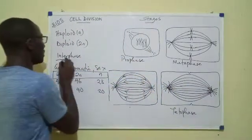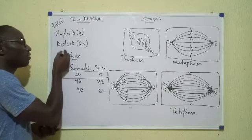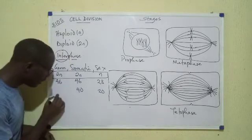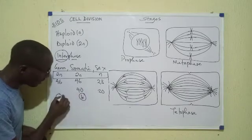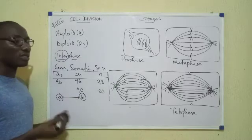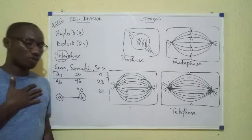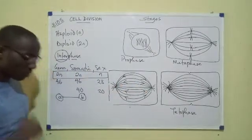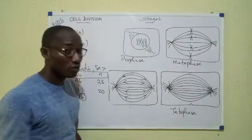Interphase. Inter is between, phase is phases. So interphase is the time period between cell divisions. That is, if one division A occurs and another division B occurs, the time period between those two occurrences is called interphase. So it's as though we are saying, if one cell is going to divide now, it will divide through these four stages of prophase, metaphase, anaphase, telophase. After telophase, what happens? It will produce daughters.